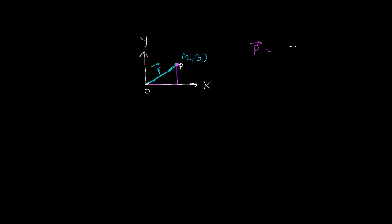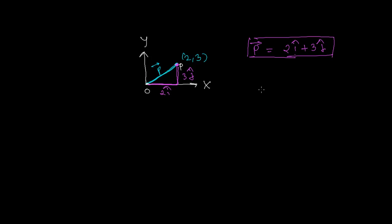Vector p is written as 2i + 3j, where 2i represents movement of 2 units in the x-axis and 3j represents movement of 3 units in the y-axis. Now I want to find the unit vector of p, which is vector p divided by the magnitude of p.